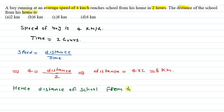The distance from his home is 8 kilometers, and according to the options, number C is correct. I hope you understood the explanation. Thank you.